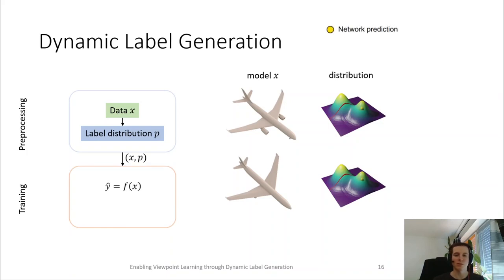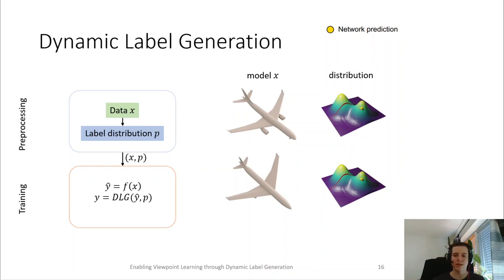During training, we again first evaluate the network to receive the network prediction, again indicated in yellow. Then, we propose to select the label dependent on the current network prediction, which is what we call dynamic label generation. Ideally, we want to select the label which is closest to the current prediction, which would correspond to the second label we saw on the previous slide.